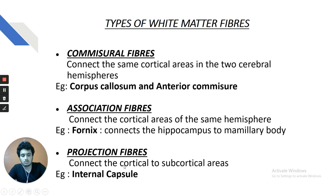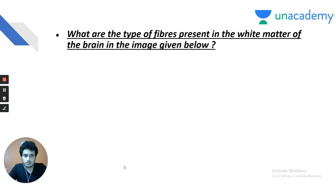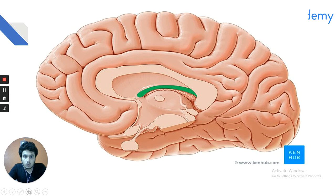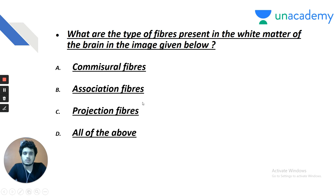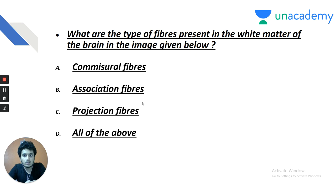Question 3: what type of fibers are present in the white matter of the brain in the image given? The answer is the fornix. For an AIIMS question: association fibers. For a PGI question: all of the above can be marked, as the fornix can contain all three fiber types. Fornix primarily stands for association fibers.